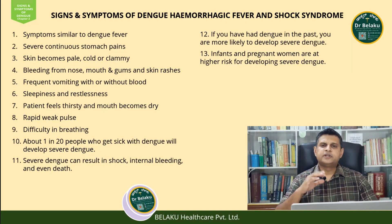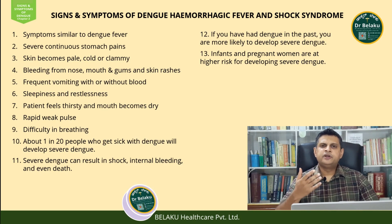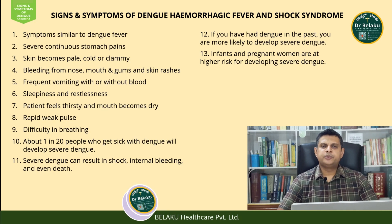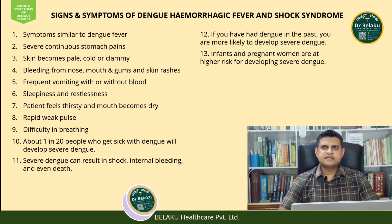Now let's understand the signs and symptoms of dengue hemorrhagic fever. The symptoms are near similar to dengue fever; however, there is severe and continuous stomach pain. The skin becomes cold, clammy, and pale. The patient may experience bleeding from the nose, mouth, and gums. The patient is sleepy yet restless and may experience severe thirst with a very dry mouth. The pulse is low and they will also experience hypotension — that is, low BP.